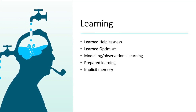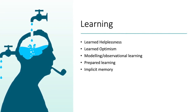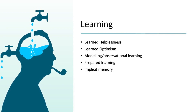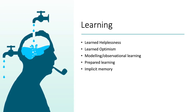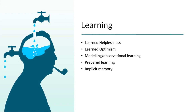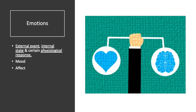Modeling, or observational learning, is when individuals learn by seeing what others do in given situations. This requires symbolic integration of others' experiences and one's own judgment, and was pioneered by Bandura. Prepared learning is the highly evolved learning for dealing with certain situations or objects, for example, snakes. Implicit memory is when individuals act like they remember something even if they can't consciously recall it.